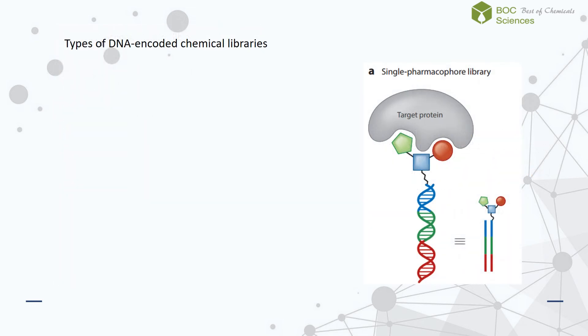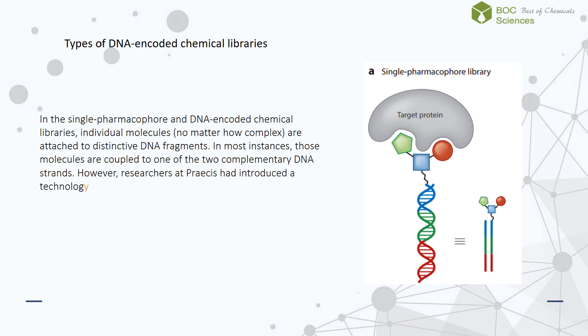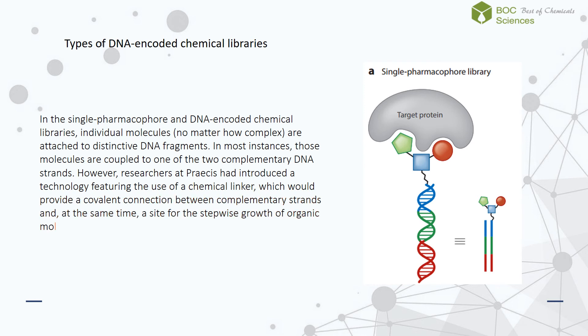Here, we talk about the types of DNA-encoded chemical libraries. In the single pharmacophore DNA-encoded chemical libraries, individual molecules are attached to distinctive DNA fragments. In most instances, those molecules are coupled to one of the two complementary DNA strands. However, researchers had introduced a technology featuring the use of a chemical linker, which would provide a covalent connection between complementary strands and, at the same time, a site for the stepwise growth of organic molecular structures.